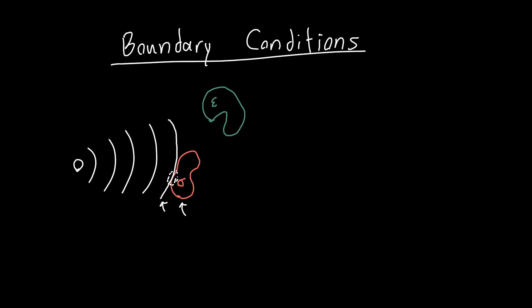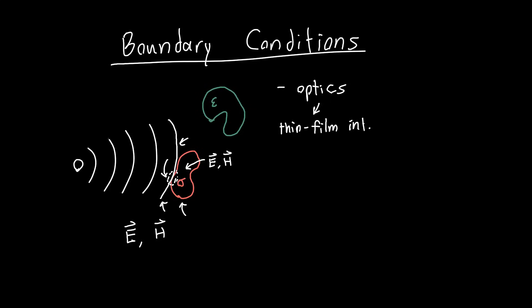If we can figure out what happens at the boundary between some electromagnetic wave — or in general some electric field or magnetic field — and what's happening inside the object, so what the electric and magnetic field is inside the object for a given field outside, then we can figure out how the object is going to behave. These boundary conditions are the foundation of many topics in optics, like thin film interference, or reflection off of an interface and its partner transmission. You also need to understand this to understand waveguides.